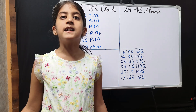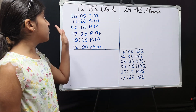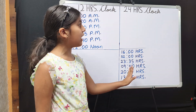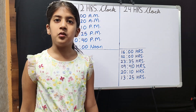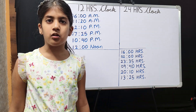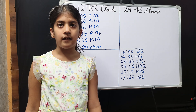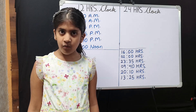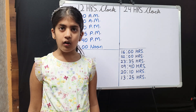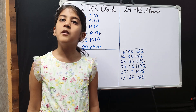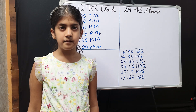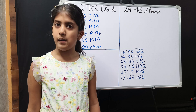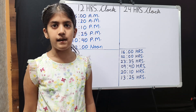The major difference between the 12-hour clock and 24-hour clock is: in the 12-hour clock, hours are written from 1 to 12. And in the 24-hour clock, hours are written from 1 to 24. Let's understand it better by some examples.